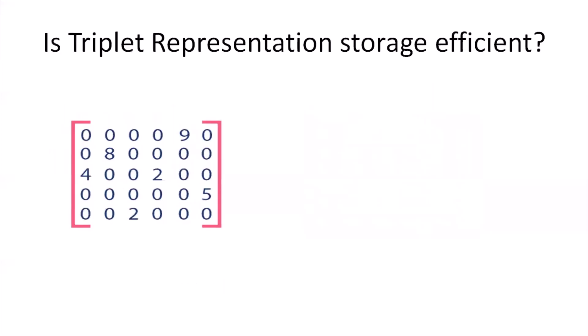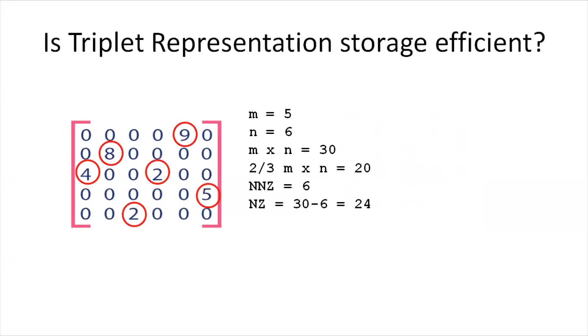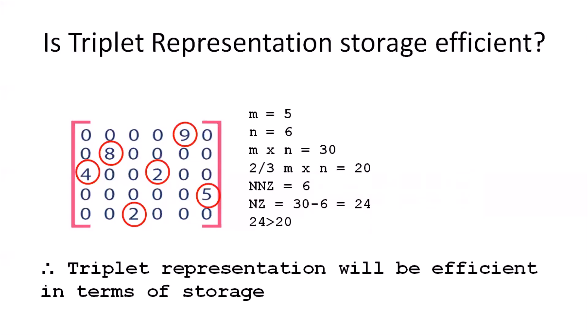Is this representation storage efficient? For the matrix we considered, the number of rows is five and columns is six — a total of 30 elements, and two-thirds of 30 is 20. The number of non-zero elements is six, so zeros total 24. Since 24 is greater than 20, the matrix is sparse. The triplet representation has NNZ + 1 = 7 rows and 3 columns, giving 21 elements total. Since 21 is less than 30, triplet representation is storage efficient for this sparse matrix.